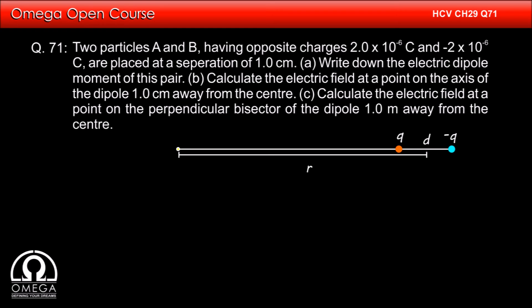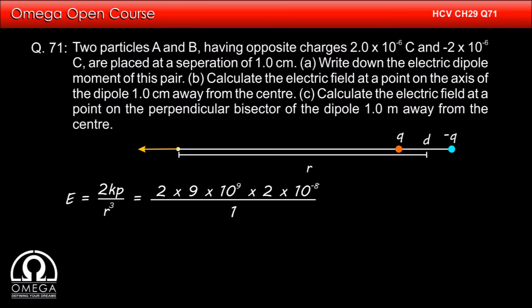On a point on the axis, the electric field due to a dipole is given by 2kp divided by r³. Putting in the values: 2 × 9×10⁹ × 2×10⁻⁸ divided by 1, that is 360 volts per meter.